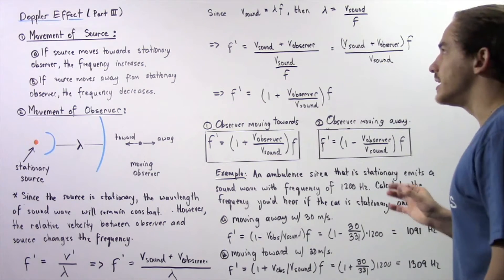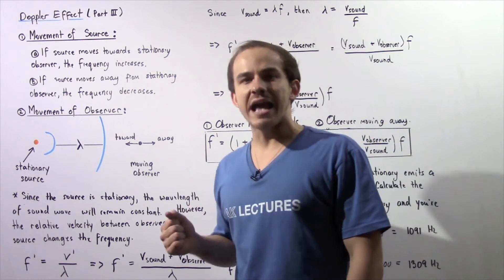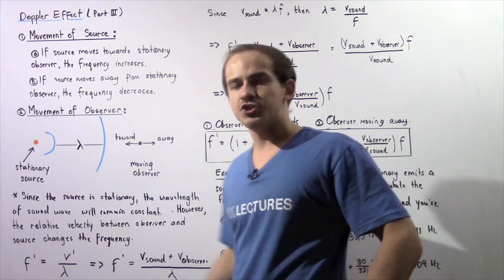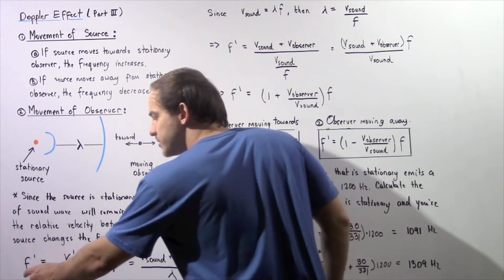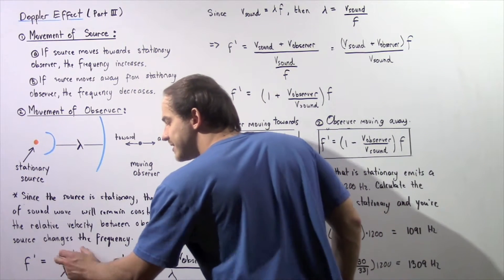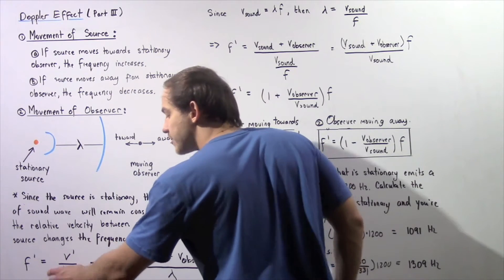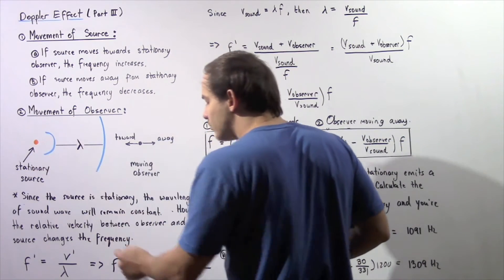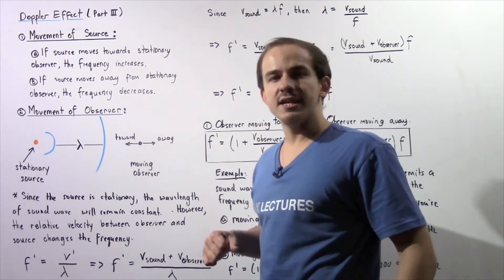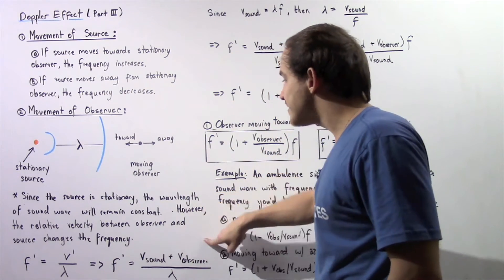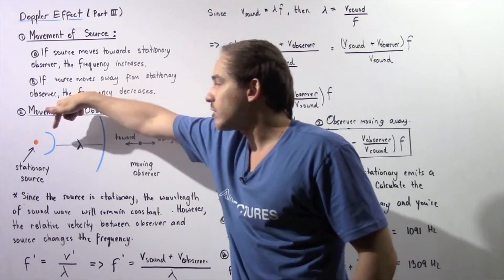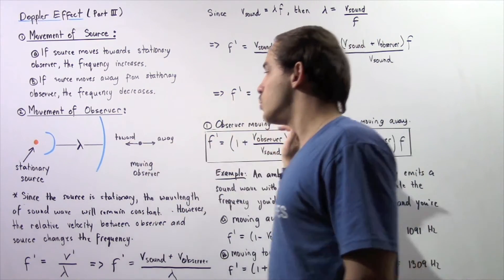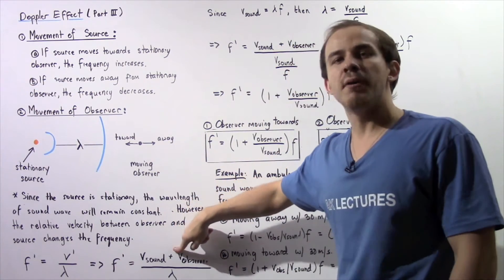To calculate the new observed frequency when the observer is moving, we use the following equation. The new frequency f' equals the relative velocity v' divided by lambda, the wavelength. The relative velocity v' is the sum of the velocity of the sound wave v_sound plus the velocity of the observer. If the observer is moving away from the sound waves, the observer velocity is negative; if moving towards the sound waves, it is positive.